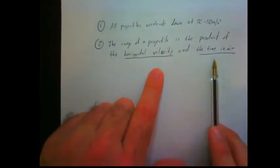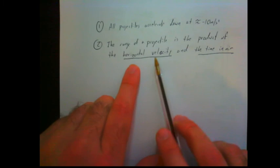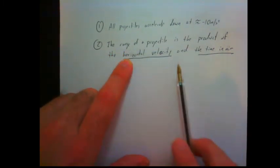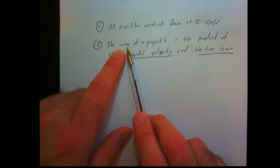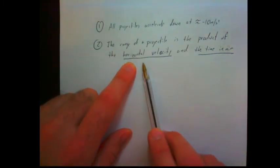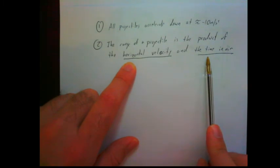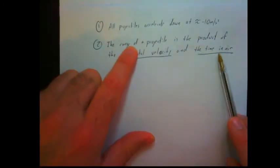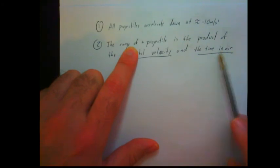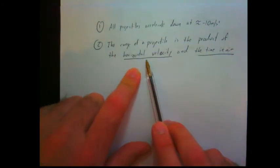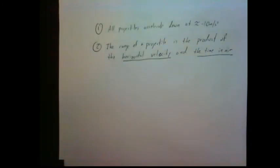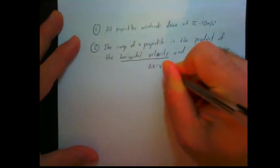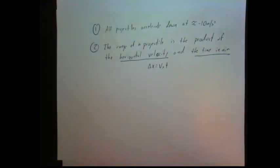That means we could work it backwards, right? If we had the range and the horizontal velocity, we could say, well, if it went 100 meters and its horizontal velocity was 10, 100 divided by 10 would be 10 seconds in the air. We could say if we had the time in the air as 8 and the range as 24, 24 divided by 8 would give us a horizontal velocity of 3 meters per second. This works either way, right? And mathematically, this is delta x equals v_x t, the same thing we were looking at before.